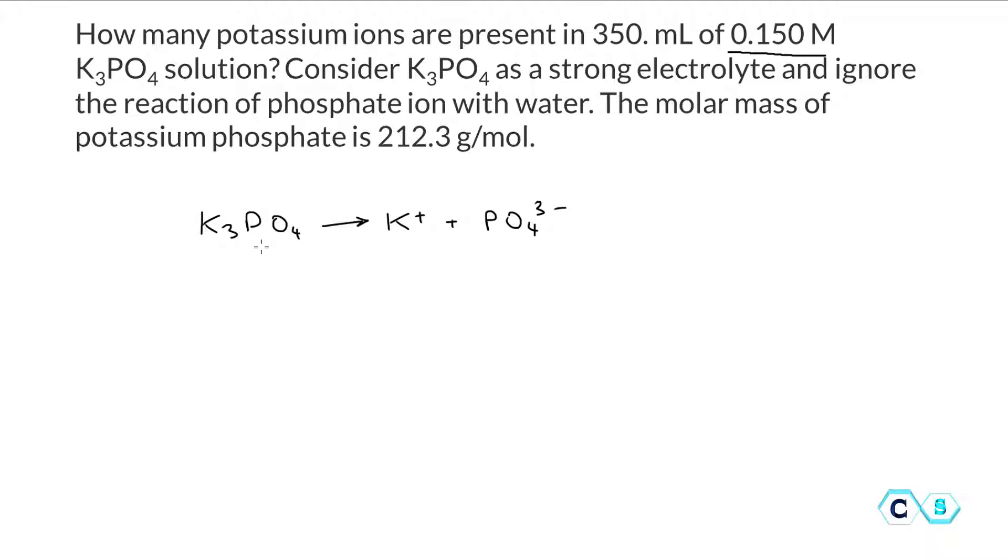At this point we don't worry about the numbers, we just put the correct formula for each ion. Then once we have that we can balance the chemical equation, so we're going to put three.